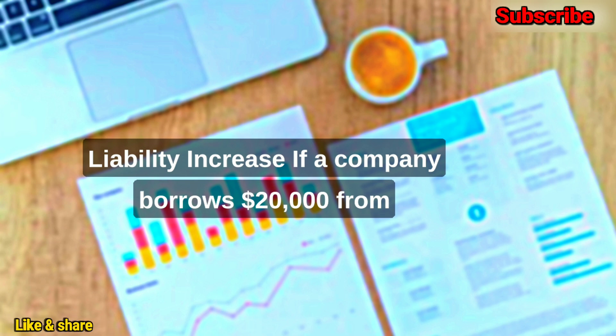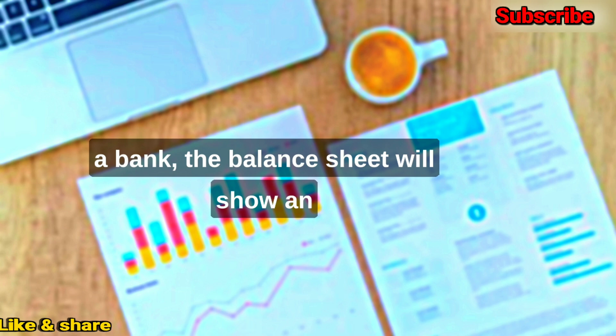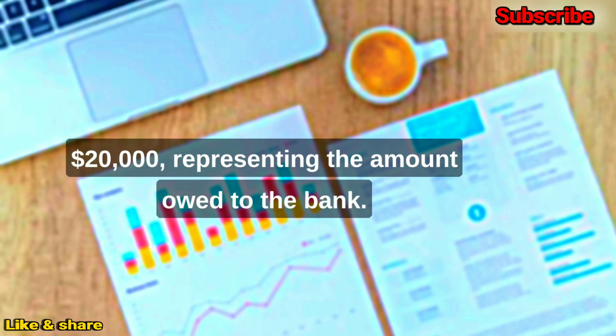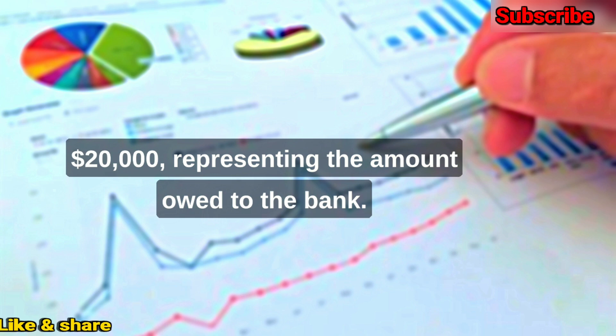Liability Increase: If a company borrows $20,000 from a bank, the balance sheet will show an increase in the notes payable liability account by $20,000, representing the amount owed to the bank.